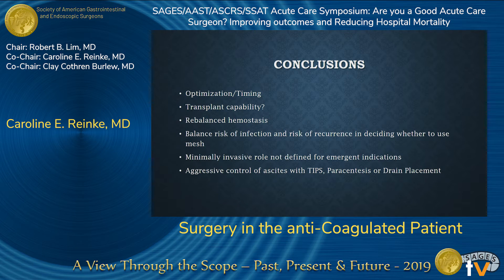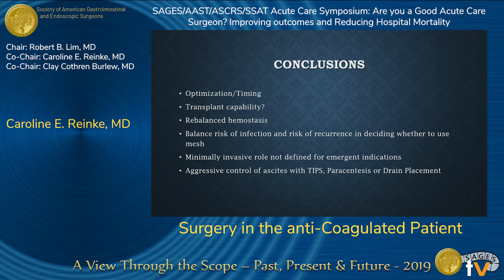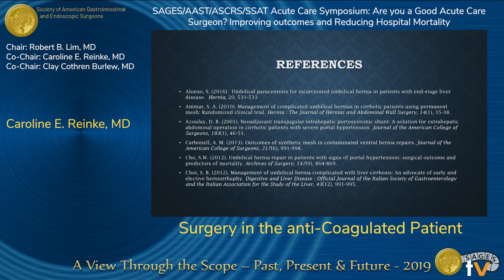In conclusion, optimizing and timing of these patients is a tricky situation. These patients are probably best cared for at a transplant center with capabilities to manage them in the perioperative setting. Rebalanced hemostasis is an important concept — avoid giving excess products and inducing portal hypertension. You want to balance the risk of infection and recurrence. For a patient with a high MELD and high mortality, you don't really have to worry about recurrence because their cirrhosis will get them before their recurrent hernia does. The minimally invasive role is not well defined for these patients, and aggressive control of ascites is important.